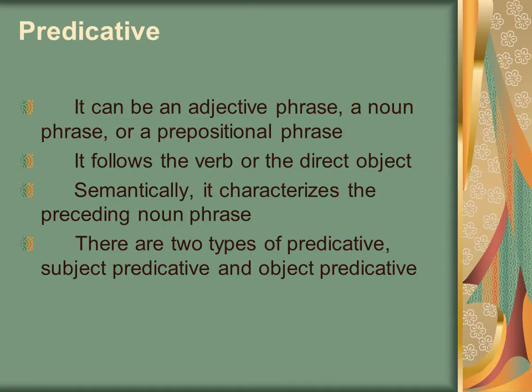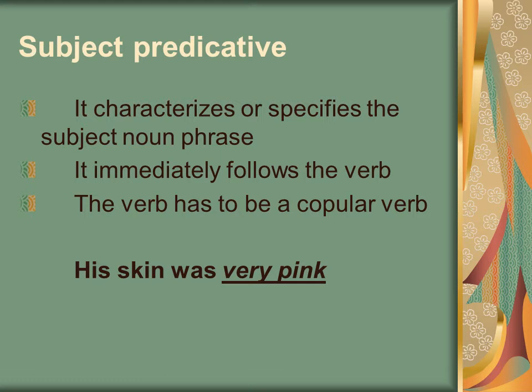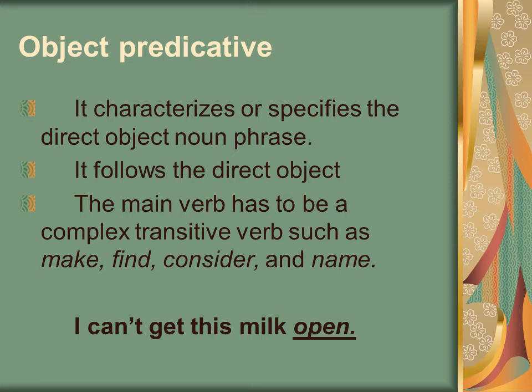The predicative can be an adjective phrase, a noun phrase, or a prepositional phrase, and we have two different kinds: subject predicative and object predicative. The subject predicative describes the subject noun phrase, immediately follows the verb, and is typically used with verbs such as 'to be' — these are called copular verbs. The object predicative describes the object rather than the subject and follows the direct object. Some common verbs that take object predicatives are called complex transitive verbs, and common ones are make, find, and consider.